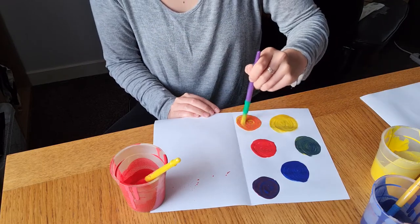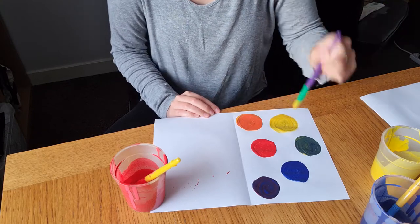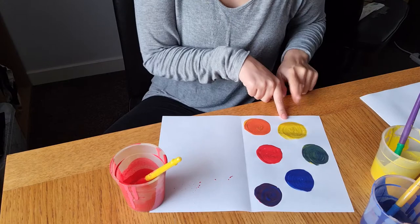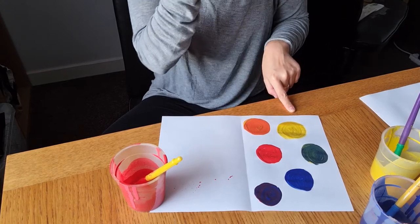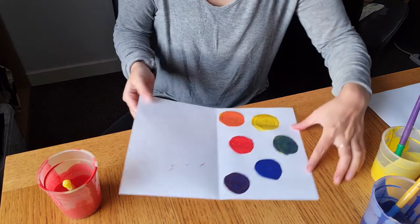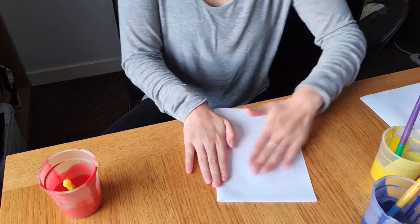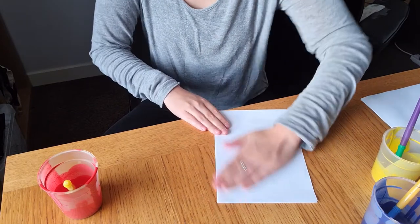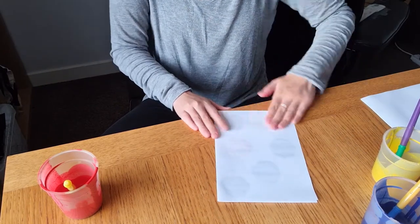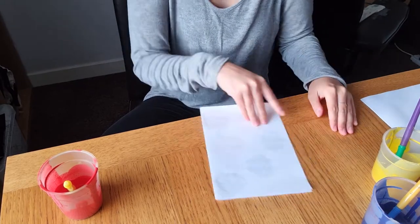So all my spots are on this side of the paper, which is my right but your left hand if you're looking at the camera that way. Then we're going to take this side and fold it right over. Give it a little press down.